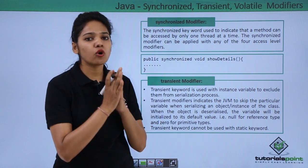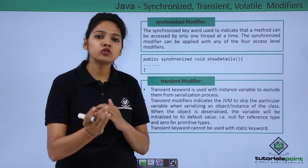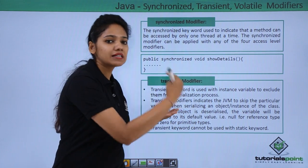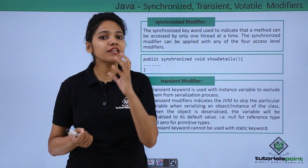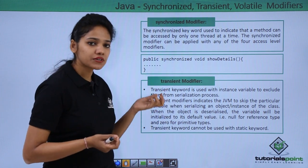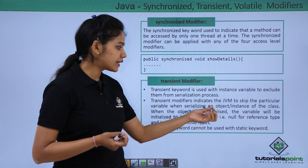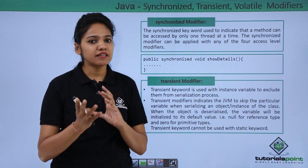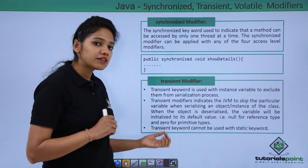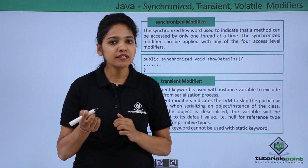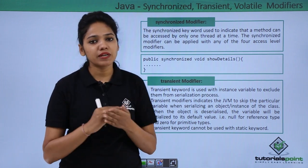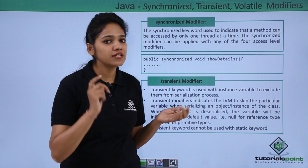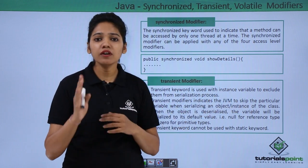In case of serialization, the state of your object is stored in streams, and when you want to retrieve it, you deserialize them. When you do not want a particular variable's object state to be stored in a stream, you use the transient keyword. The transient modifier indicates the JVM to skip a particular variable from serialization. One important thing: a transient keyword cannot be used with the static keyword, because static variables are class variables, while transient can only be used with instance variables.